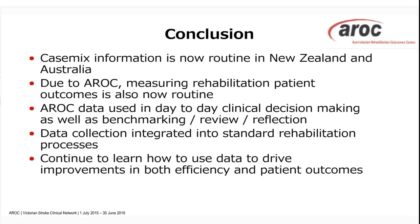Regarding how we determine 'expected versus actual': because we case mix adjust, we understand the mix of cases a facility sees. Across the whole of Australia, we look at a particular ANSNAP class and say that on average within that class there is, for example, a length of stay of 10 days and a functional change of 10 points. If an individual facility for that SNAP class has a length of stay of 20 days and only achieves 10 points, we would expect 10 days but they've got 20. We do that for each ANSNAP class and add it all together — that's a quick explanation of the case mix adjustment.